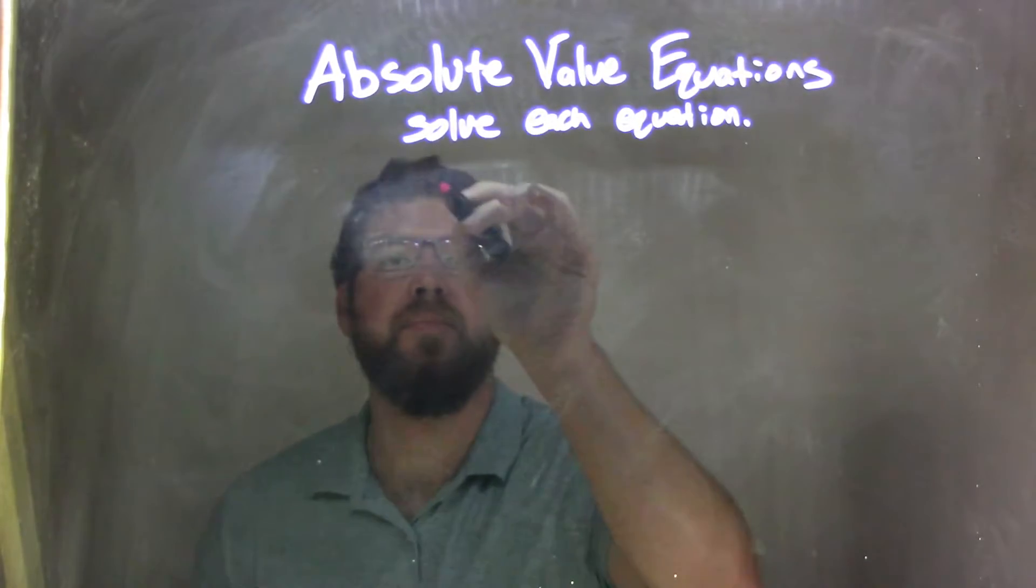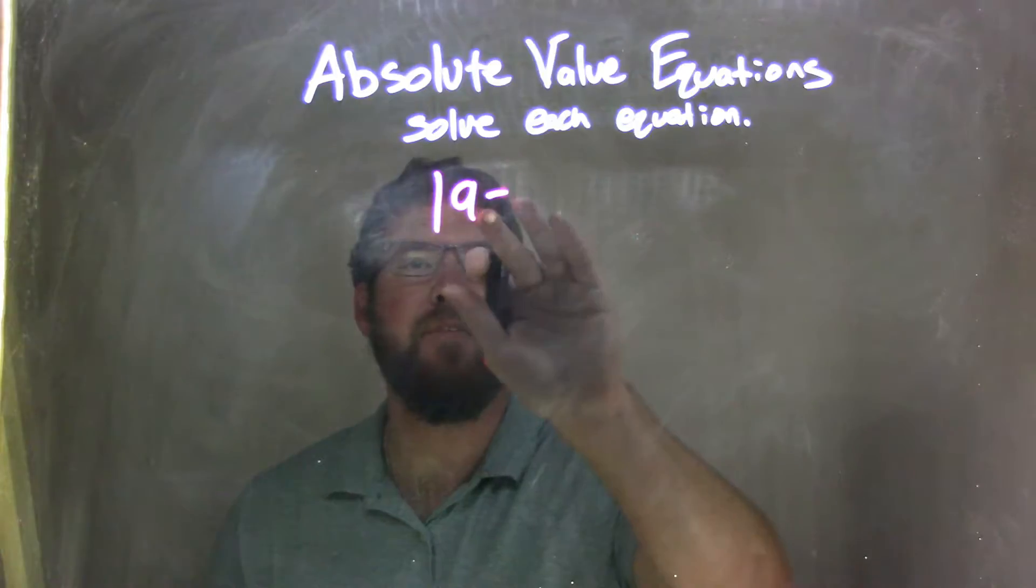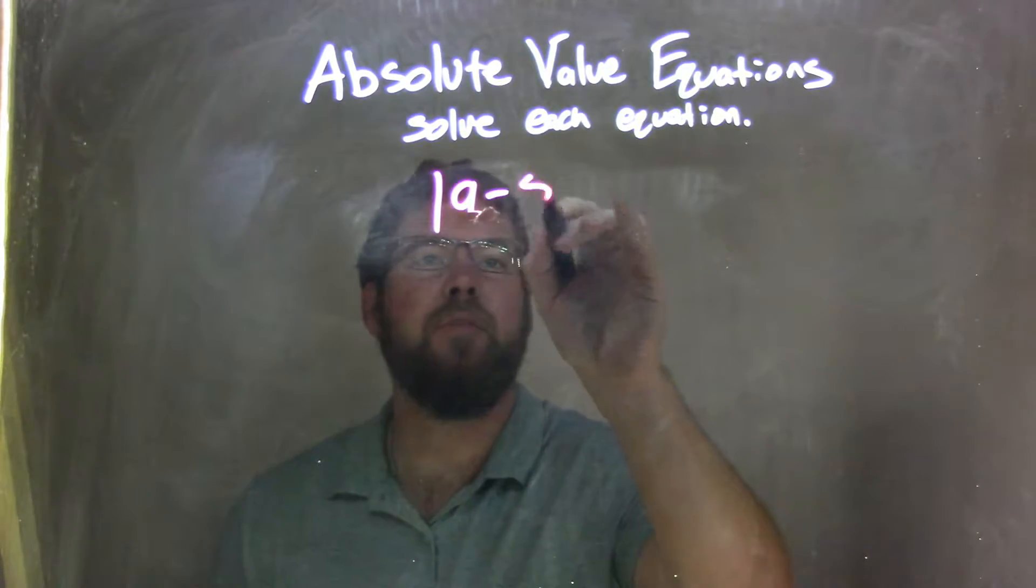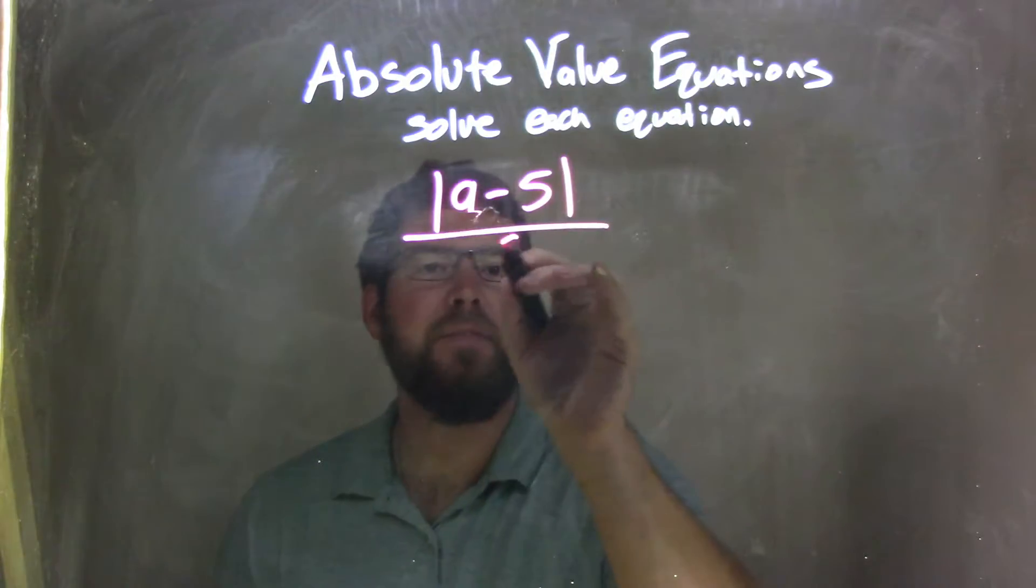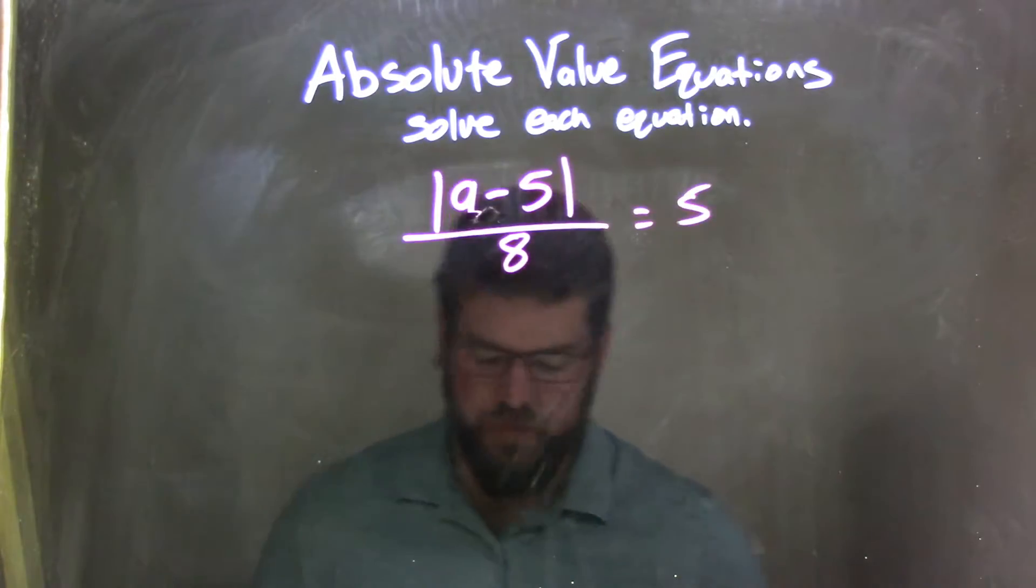If I was given this equation: absolute value of a minus 5, over 8, equals 5.